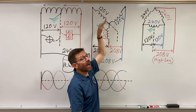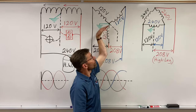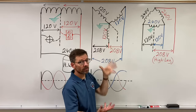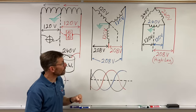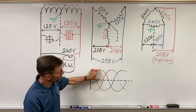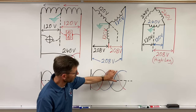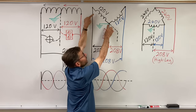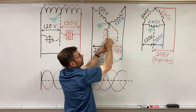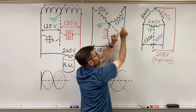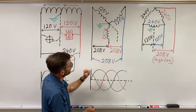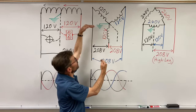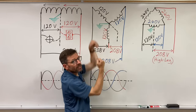Therefore, the lines in the Y or star configuration have resultant vectors pointing 120 degrees apart from each other. Although black to neutral is 120, red to neutral is 120, and blue to neutral is 120 — just across each individual winding — when I go black to red, I go through two windings. But it's different from the split-phase system because those windings are 120 degrees out of phase from each other. If they peaked and troughed directly opposite, I could just add them.